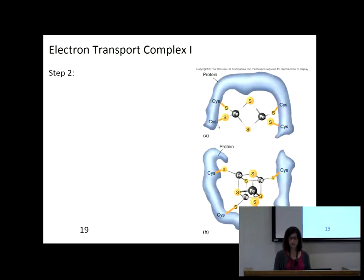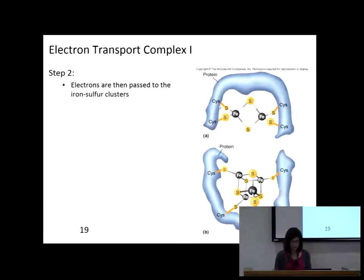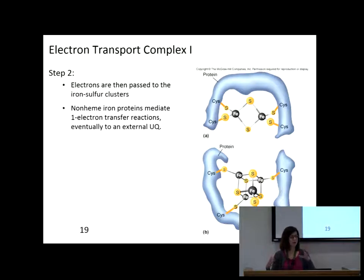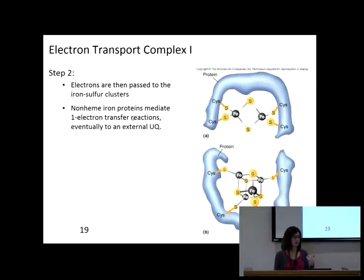Iron-sulfur centers are non-heme iron proteins. When we encounter iron in enzymes and proteins, it's often in a heme structure — like in hemoglobin. So we need to point out when iron is present that it's not in the heme structure — that's why we call it a non-heme iron structure. You can have a two-iron or a four-iron form; those are two different forms.